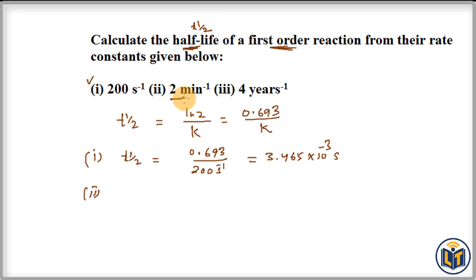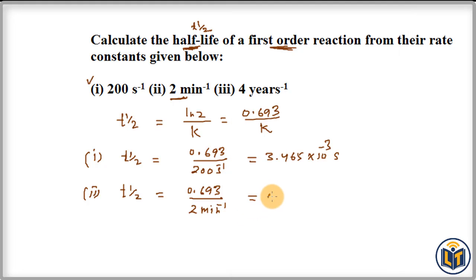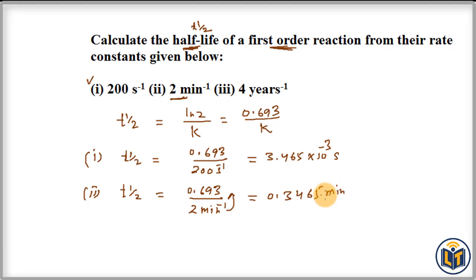For the second part, the rate constant is 2 per minute. T½ = 0.693 / 2. Dividing gives 0.3465. Since the rate constant is in per minute, the half-life is 0.3465 minutes.